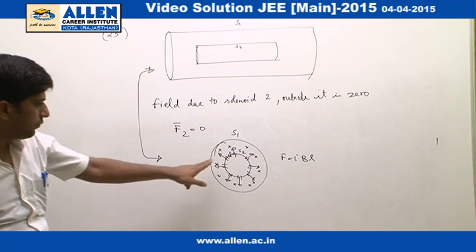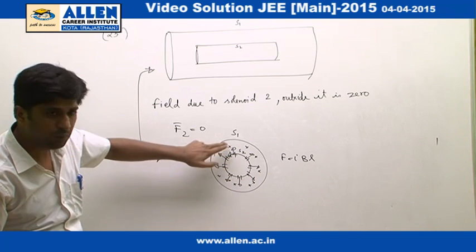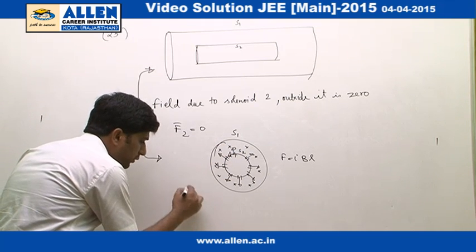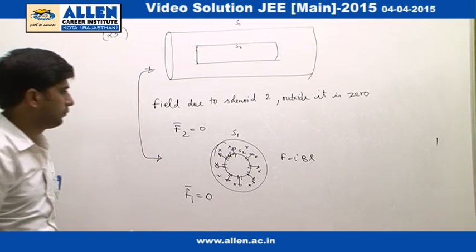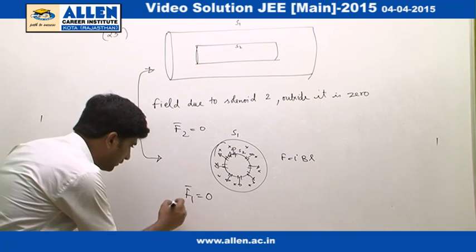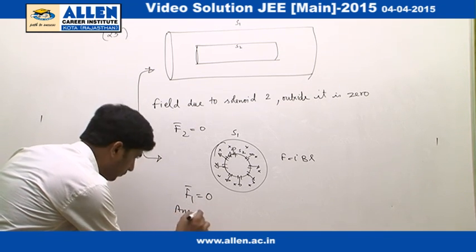Therefore net force on the solenoid S2 must be 0. It means F1 is also equal to 0. Therefore, correct answer is 3.